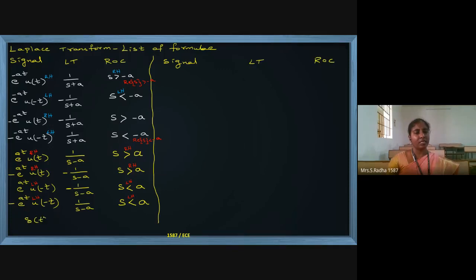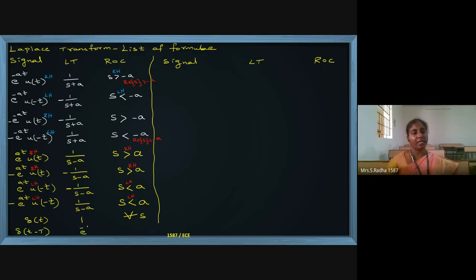If you have delta(t), its Laplace transform is 1 and ROC is for all s, from minus infinity to plus infinity. If you have delta(t minus T), it is a time-shifted signal and the Laplace transform is e^(-sT), ROC is for all s. For simply u(t), the step signal, Laplace is 1 by s. It is right-handed so ROC is s greater than zero.